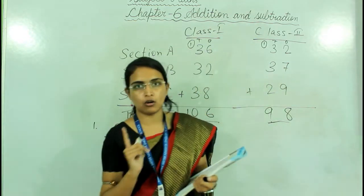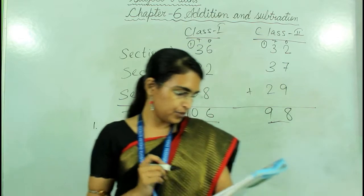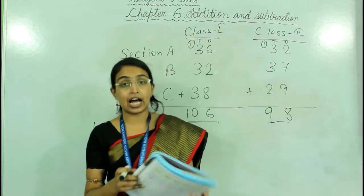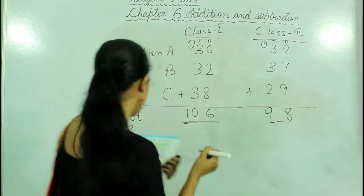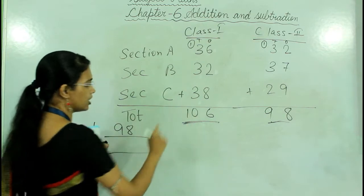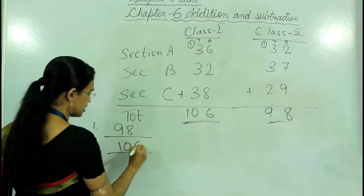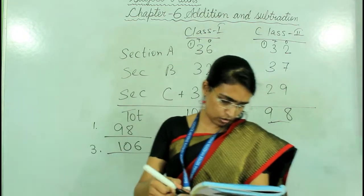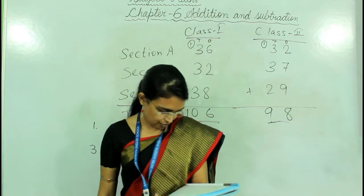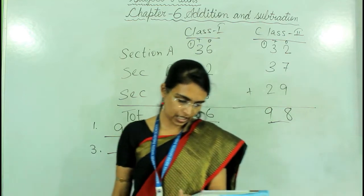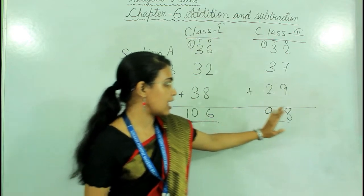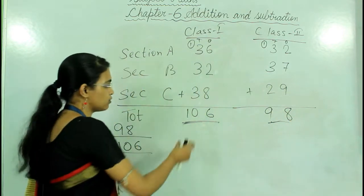In this way you will find out the total number of students in class 3 and class 4 — this is your homework. Now question number 1: there are blank students in Abdul's class. Abdul reads in class 2, so the total number of students in class 2 is 98. Write 98. Question number 2 is your homework. Question number 3: there are blank students in Raj's class. Raj reads in class 1, so the answer is 106.